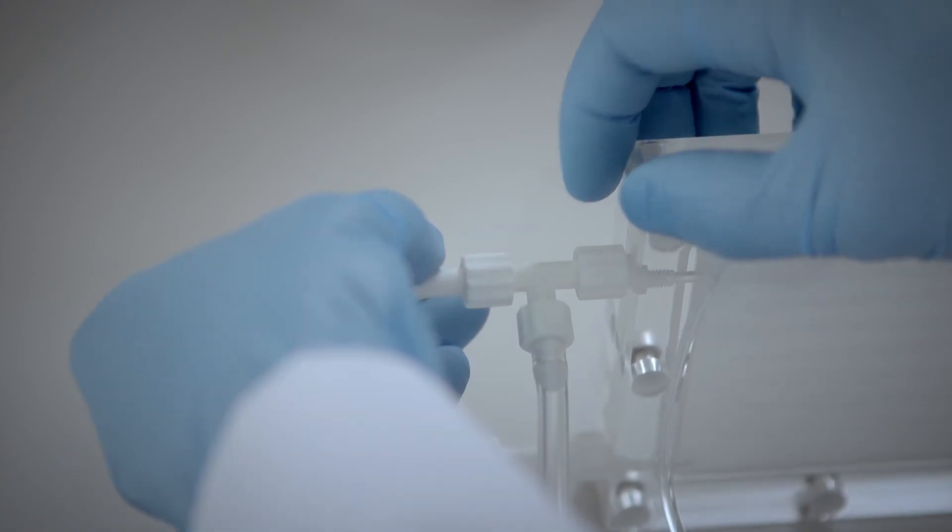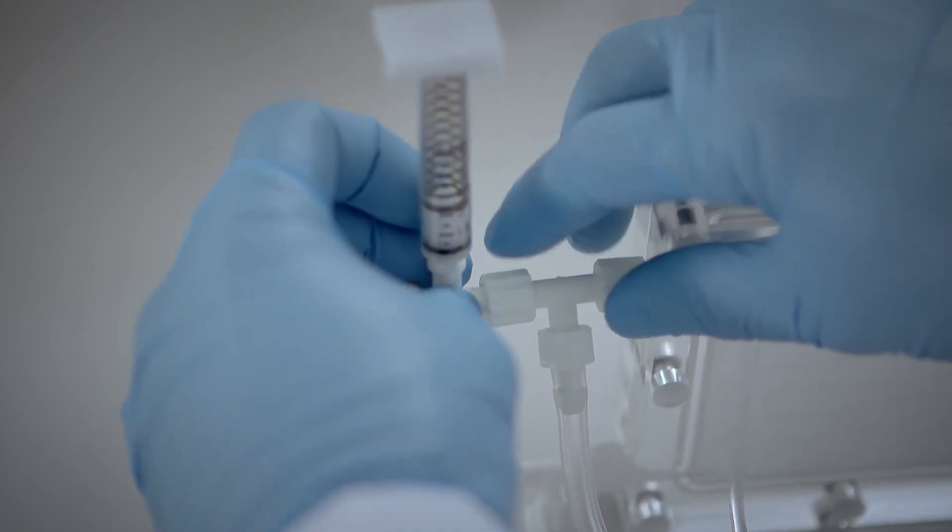Then attach the pressure indicator and the retentate tubing with the pink color-coded flow restrictor.